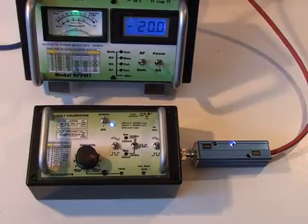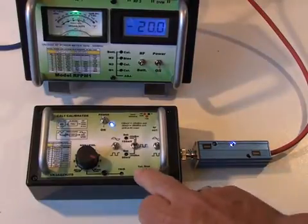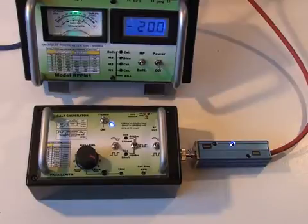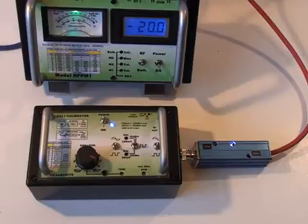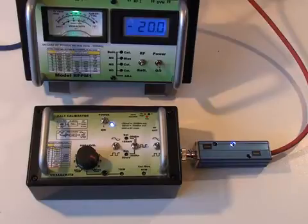The unusual feature of the calibrator is that it puts out a square wave, whereas the AD8307 chip is designed to work with sine waves. In fact, the DC output of the chip is proportional to the peak-to-peak amplitude of the RF signal across the input.